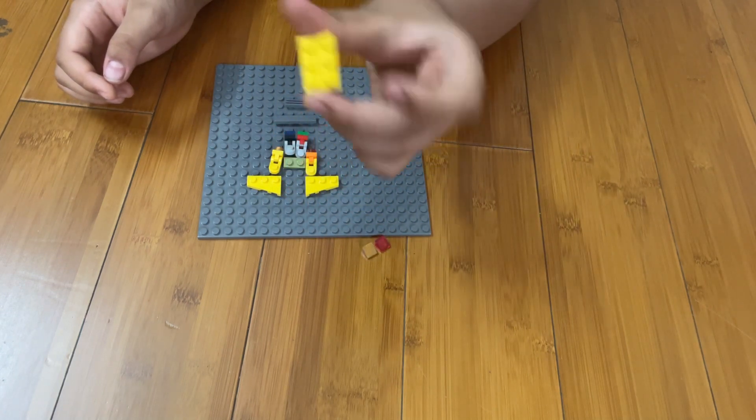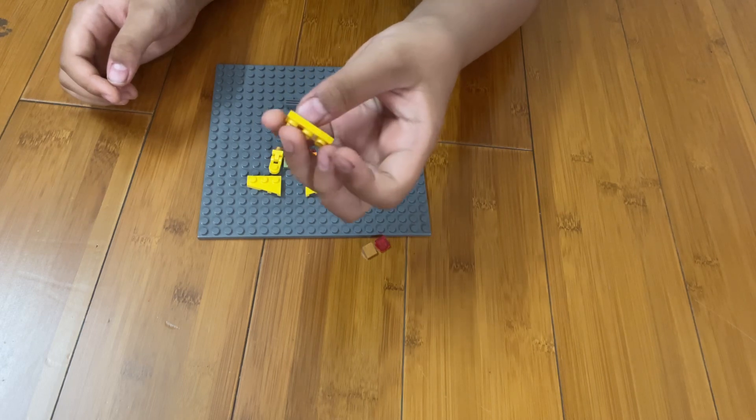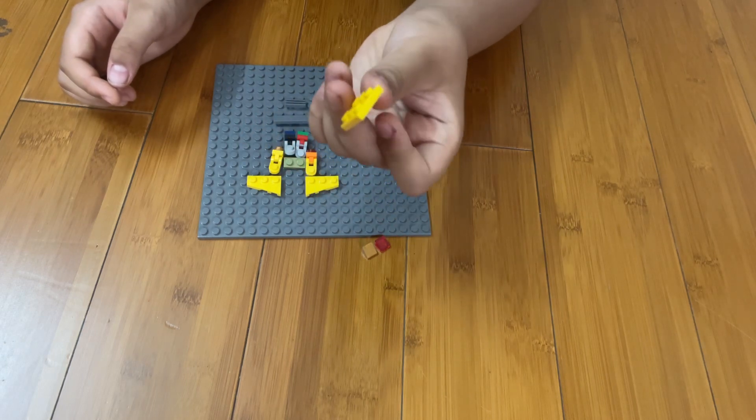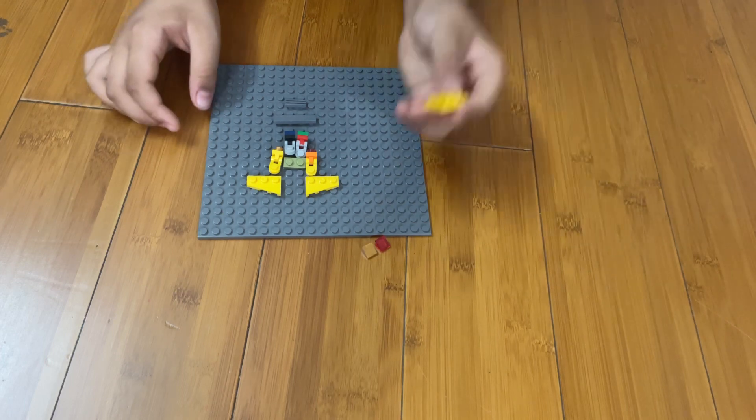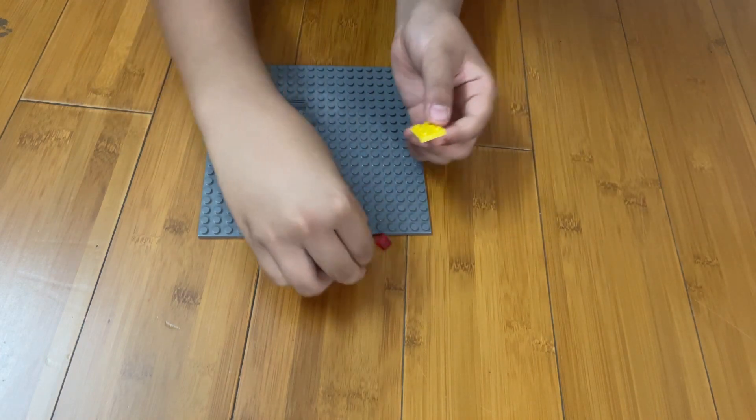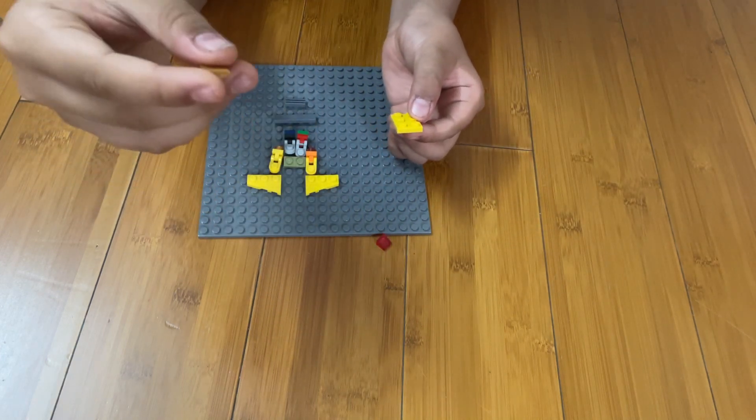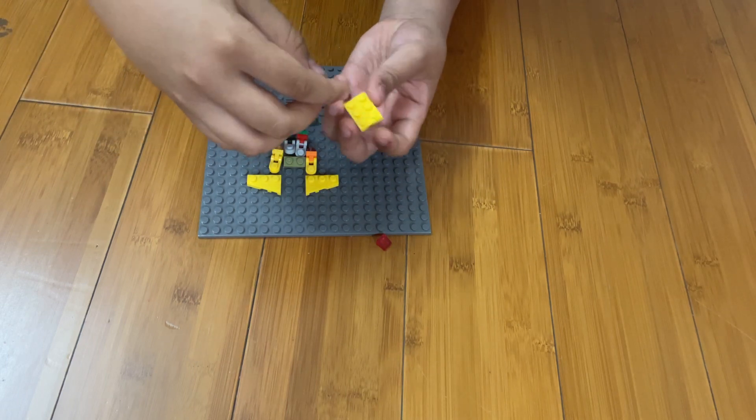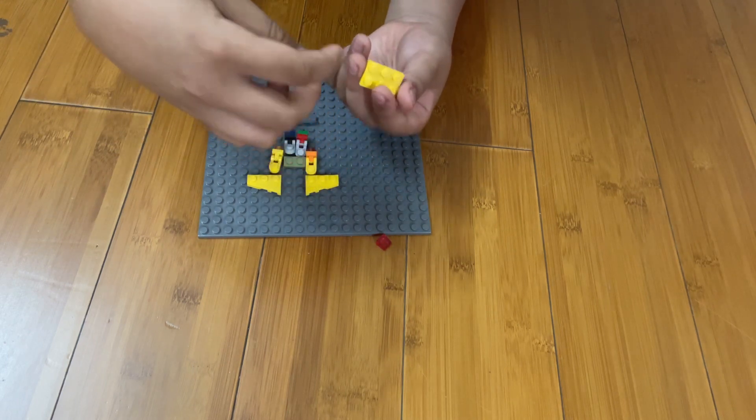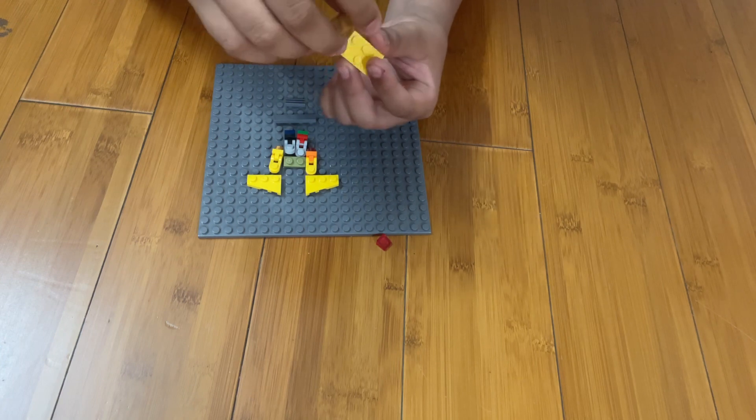This 2x3 yellow piece, only one notch and only six notches, and then you will connect it with these 1x1 rooftop blocks. You'll put them on the same direction as you're pointing in an arrow.